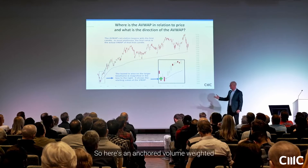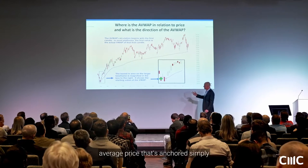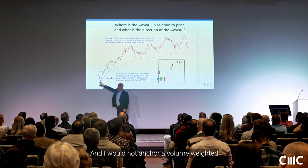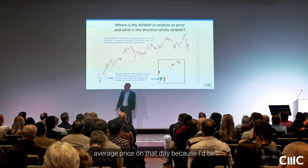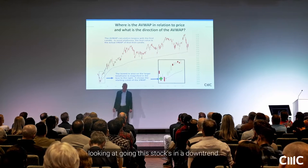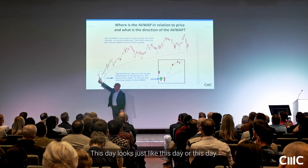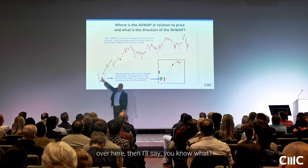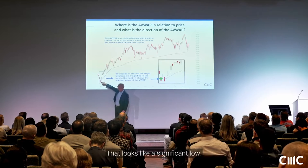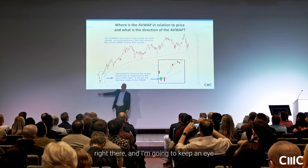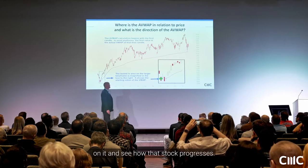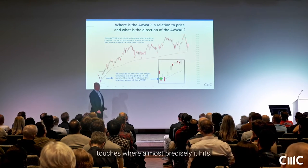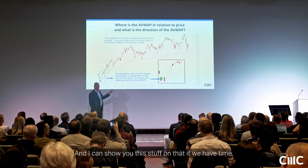Here's an anchored volume weighted average price anchored to a significant low. I would not anchor a VWAP on that day because the stock is in a downtrend — this day looks just like any other day. But when it starts to rally, I'll say that looks like a significant low. I'll put my anchor there and keep an eye on it. You can see there are two touches where it hits almost precisely.